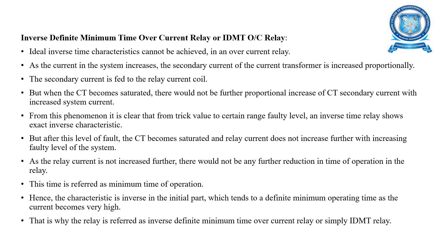Next is the inverse definite minimum time (IDMT) overcurrent relay. The ideal inverse time characteristic cannot be achieved in an overcurrent relay, since the secondary current is fed to the relay current coil. When the current transformer becomes saturated, there is no further proportional increase in CT secondary current with increased system current. As relay current does not increase further, there is no further reduction in operating time. This minimum time is referred to as the minimum time of operation, giving characteristics that are inverse initially but tend to a definite minimum time at high currents.